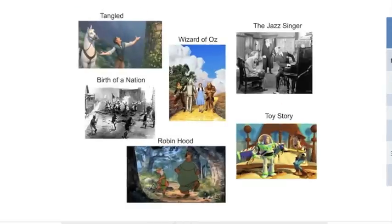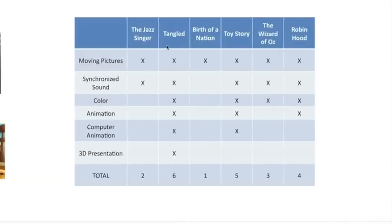Now let's look at how to draw a cladogram. Instead of starting with organisms, we'll start with movies to make it simpler. We have six movies, and we'll make a chart listing which characteristics each movie has. Each column gets an X if the movie has that characteristic. The first characteristic is moving pictures — all movies have this, so every column gets an X. Synchronized sound means it's not a silent film; Birth of a Nation is a silent film, so it doesn't get an X for sound, but the other five do.